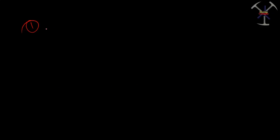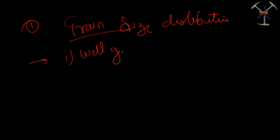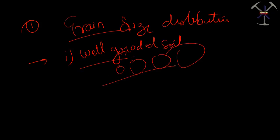The first property we're going to deal with is grain size distribution of the soil. The main thing to understand here is there are two types: first, we have well graded soil. Well graded soil means you have all the particles ranging from small to bigger size — it is graded well from very small size to big size. Second, we have poorly graded soil.